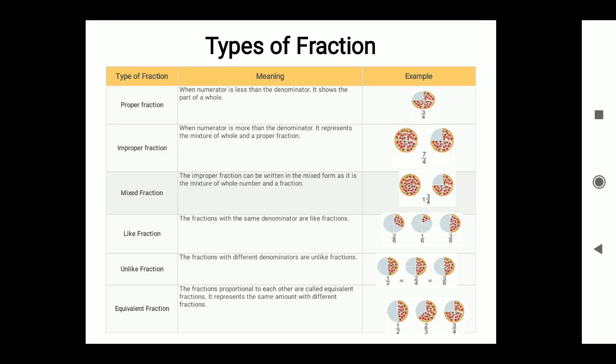A mixed fraction is when an improper fraction is written in mixed form — it is a mixture of a whole number and a fraction. For example, 1 and 3/4. Like fractions are fractions with the same denominator. For example: 2/6, 1/6, 3/6. Unlike fractions are fractions with different denominators. For example: 1/2, 2/3, 3/6.